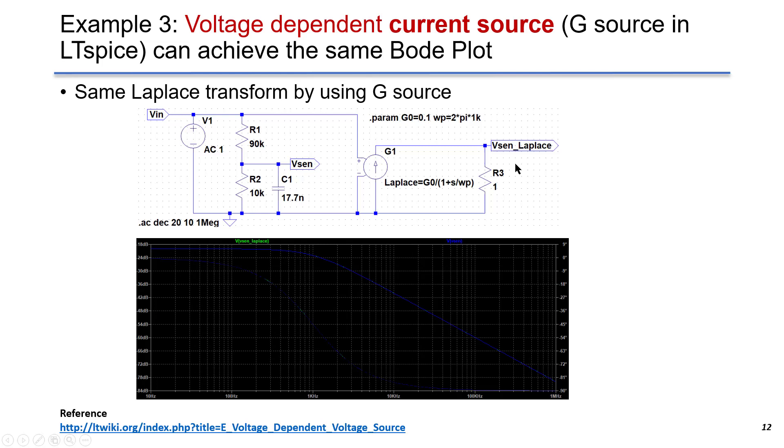In this case, we put a G source in series with 1 ohm resistor as a load. And we measure the output voltage over this 1 ohm resistor. We put the same Laplace transform equations here into the G1 source and put the same parameter here. The output voltage is equivalent to the voltage source as before and gives the same result.